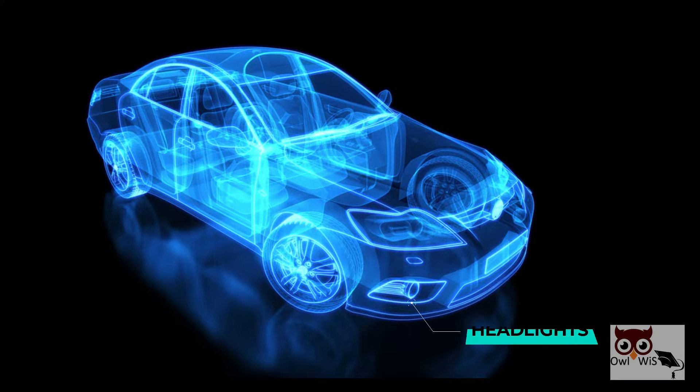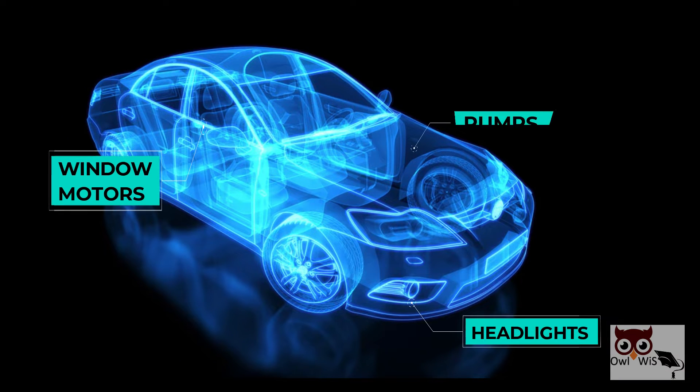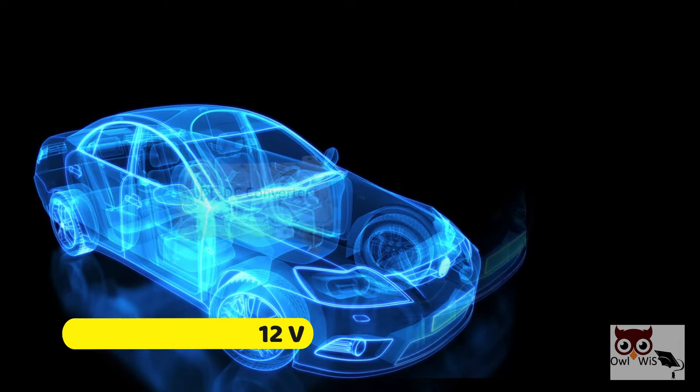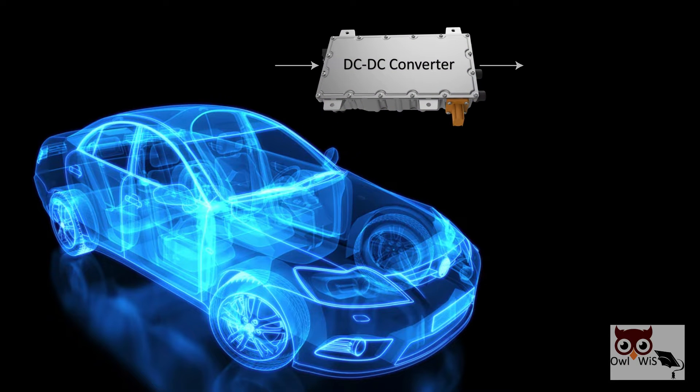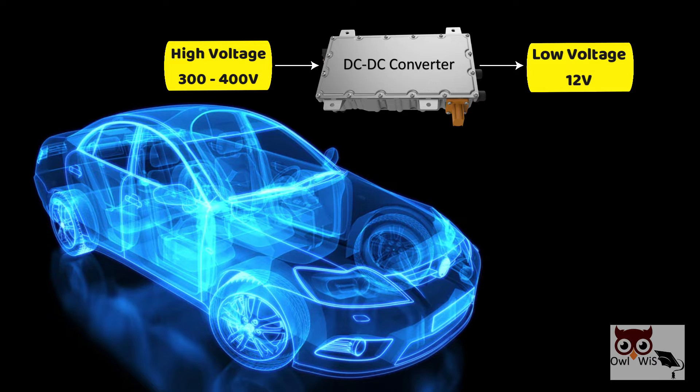Loads such as headlights, window motors, and pumps require around 12 volts. The main DC-DC converter steps down the battery voltage to 12 volts. It also has to be adjustable as some loads may need outputs in the range of 12.5 to 15.5 volts.